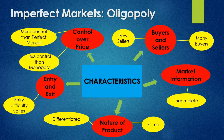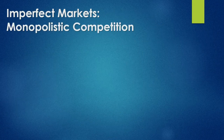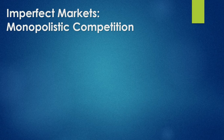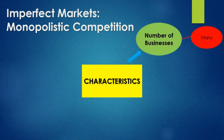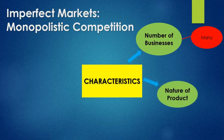We then move on to the last type of imperfect market: monopolistic competition. It is a market structure that combines certain features of both monopoly and perfect competition. Looking at what makes up this market: the number of businesses — there are many businesses, many sellers, and many buyers. The kind of products they sell are differentiated products; as mentioned earlier, they are very similar but not identical, and they serve very similar purposes.